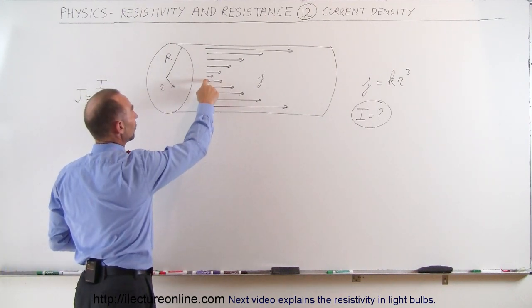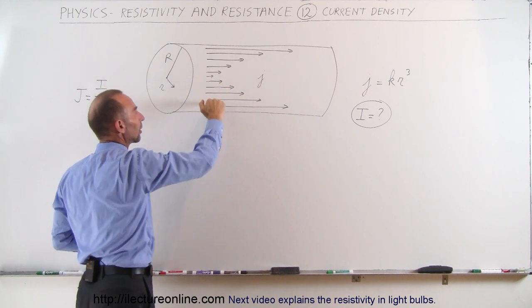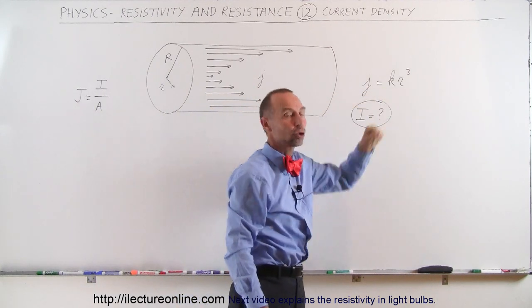At the center there's zero current so it goes down to zero and as you go out towards the edge of the conductor the current increases according to the equation. Current density is equal to K times R cubed.